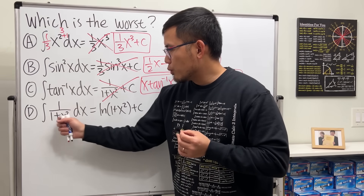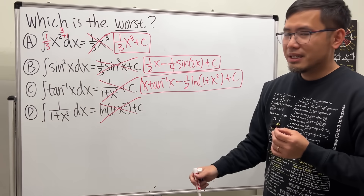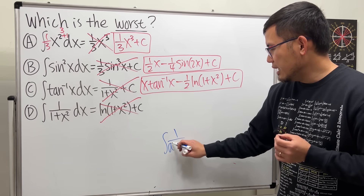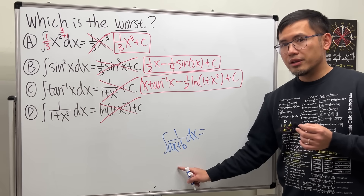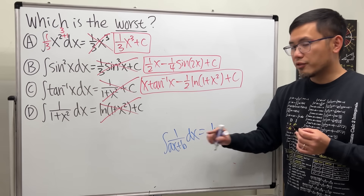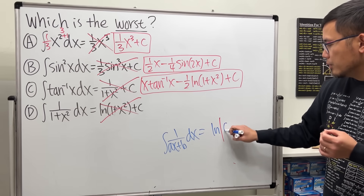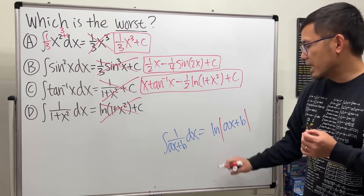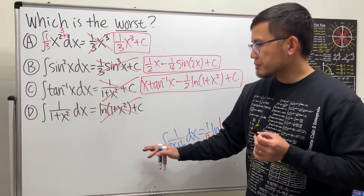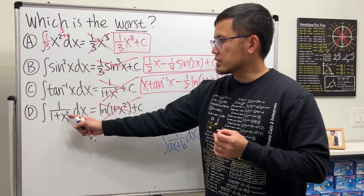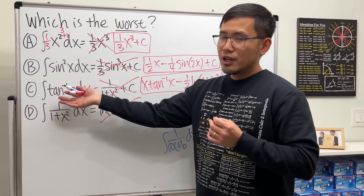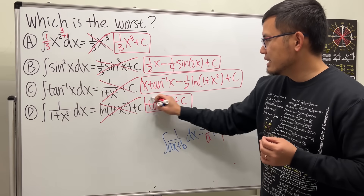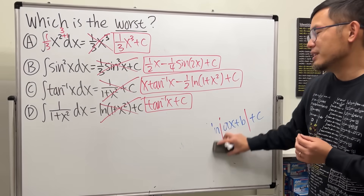Lastly, the integral of 1/(1 + x²) — the given answer is wrong. Here's the key: the formula ∫1/(ax + b) dx = (1/a)ln|ax + b| + C applies only when you have a linear function, x to the first power. Here we have x squared, so we can't use that. This is exactly when we use arctan: the integral of 1/(1 + x²) is arctan(x) + C.